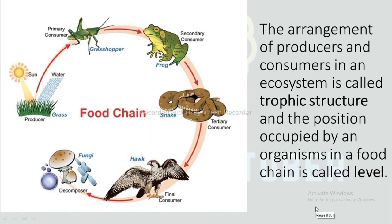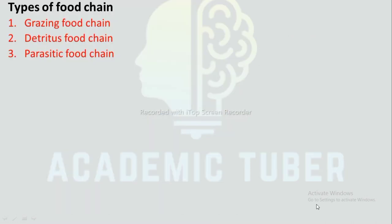As shown in a diagram: grasshopper (primary consumer) feeds on grass (producers); frog (secondary consumer) feeds on grasshopper; snake (tertiary consumer) feeds on frog; and hawk (final consumer) feeds on snake. When the hawk dies, it is decomposed by decomposers.